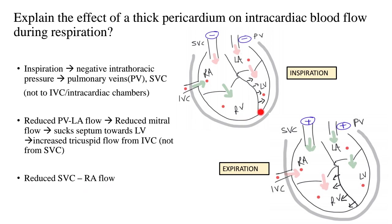So these are the events which occur during inspiration: reduced flow on the left side, reduced flow between SVC and RA, increased flow between IVC, RA and RV, and the shifting of the septum towards the LV — all of this because of the thick shell of constrictive pericarditis.